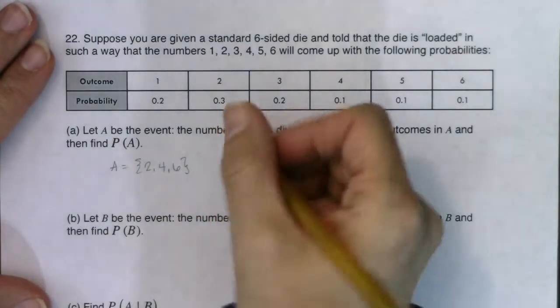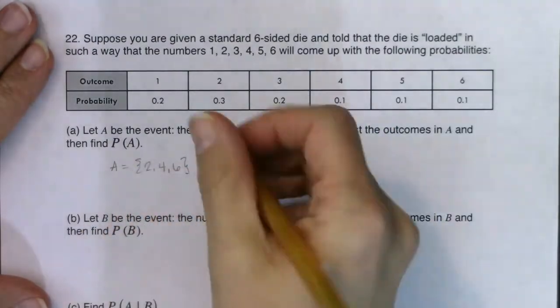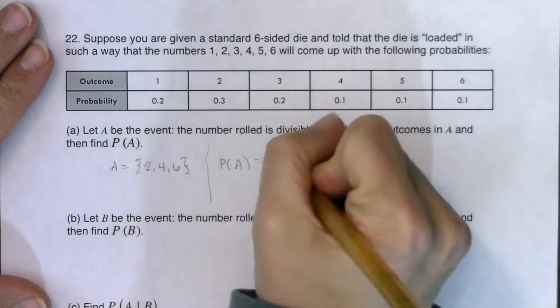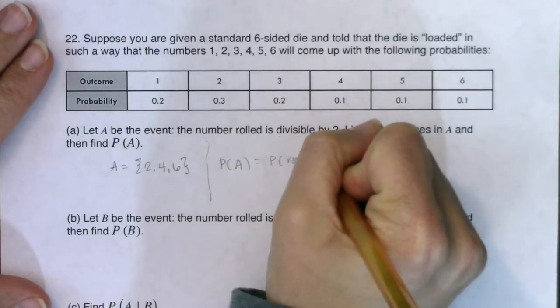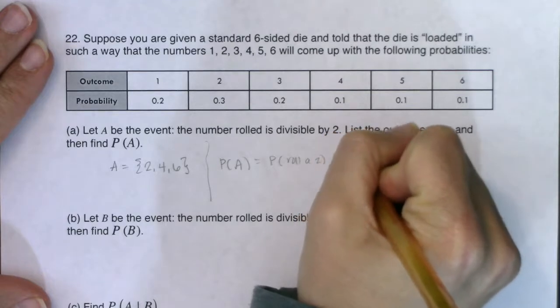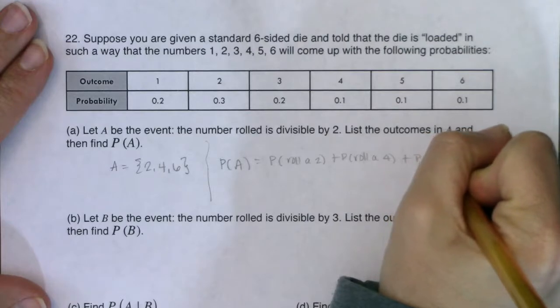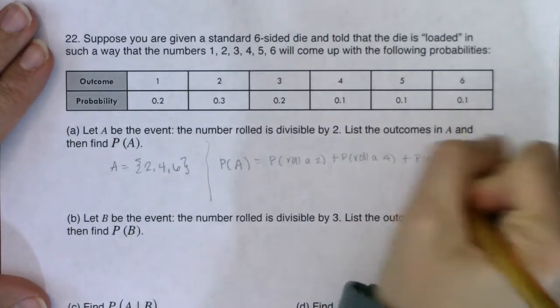And when they ask you then for the second part to find the probability that event A happens, right, that's the probability that you roll a two, or you roll a four, or you roll a six.